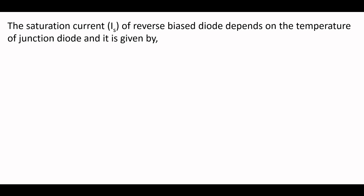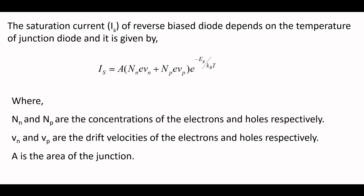The saturation current Is of the reverse biased diode depends on the temperature of the junction diode and is given by Is equals A times Nn E vn plus Np E vp times e to the power minus Eg upon Kb T. Here, Nn and Np are the concentrations of the electrons and holes, Vn and Vp are the drift velocities of the electrons and holes, and A is the area of the junction.